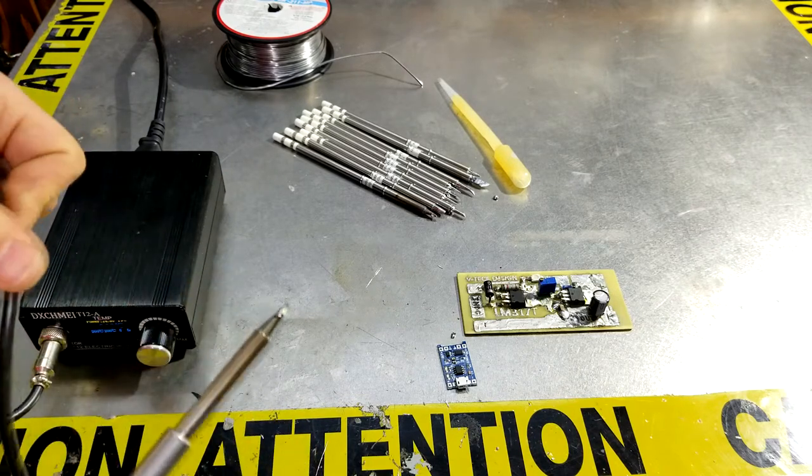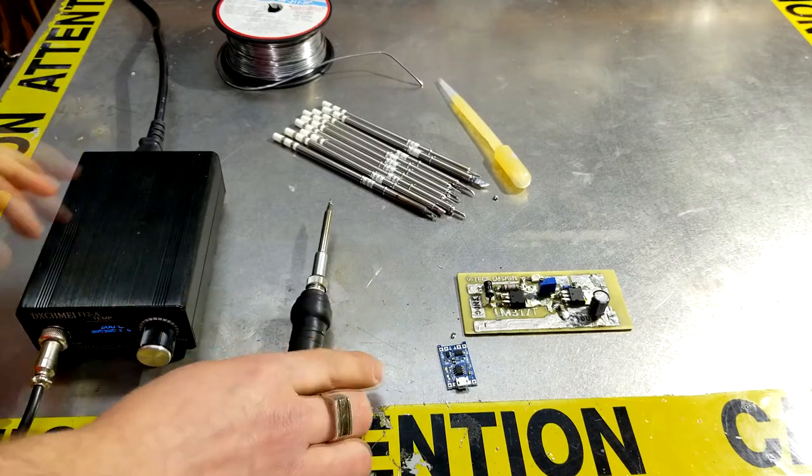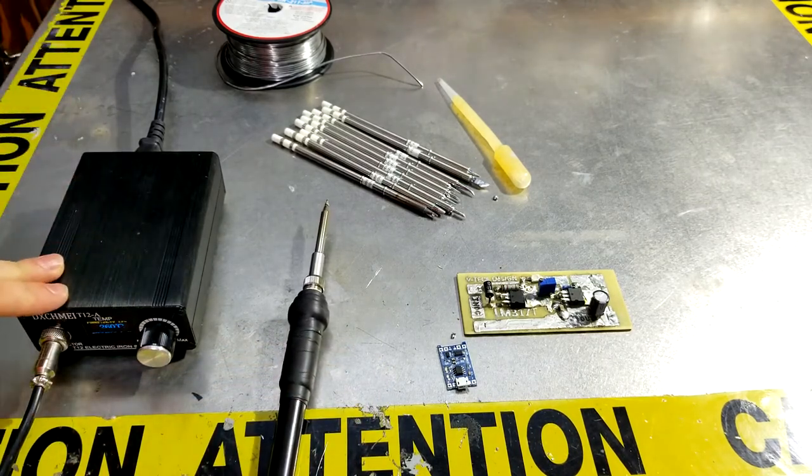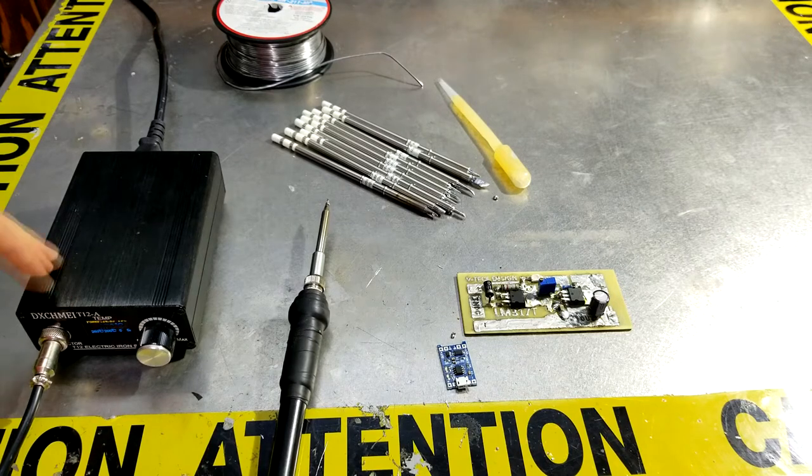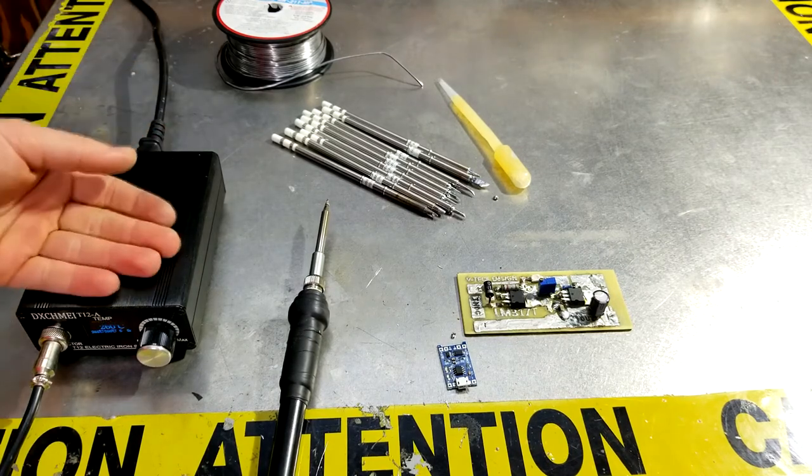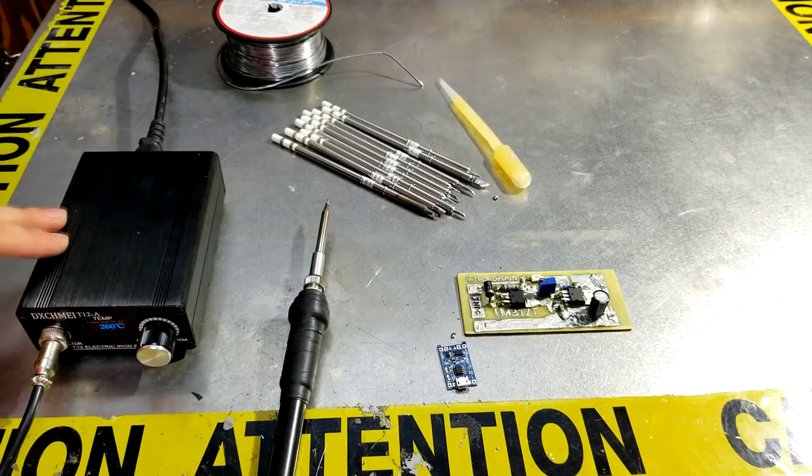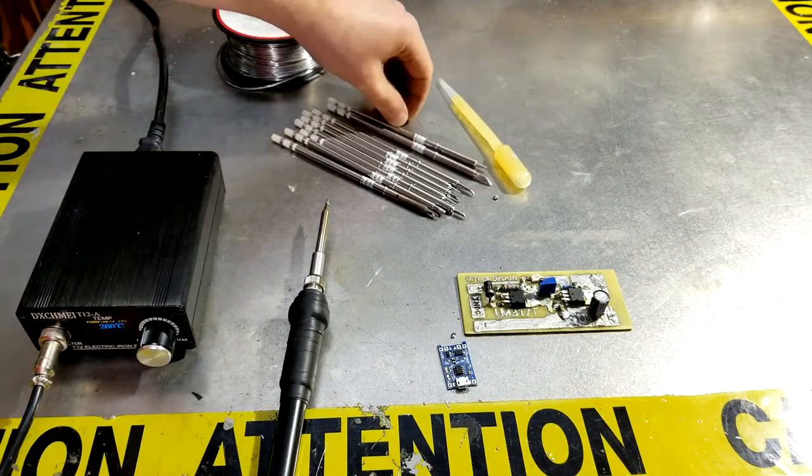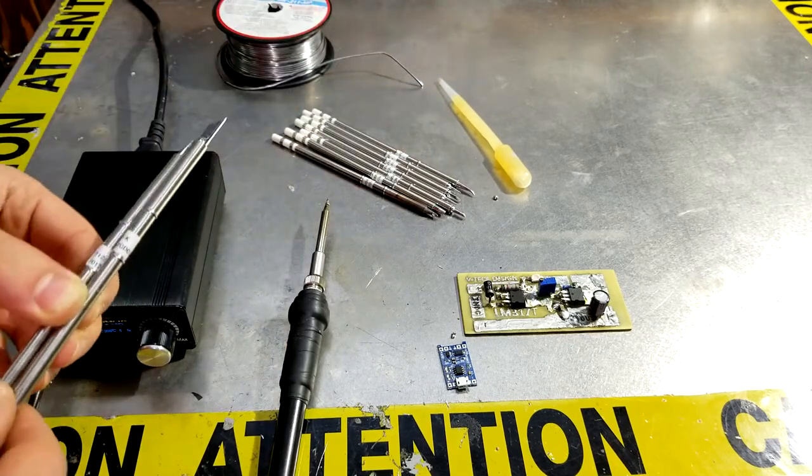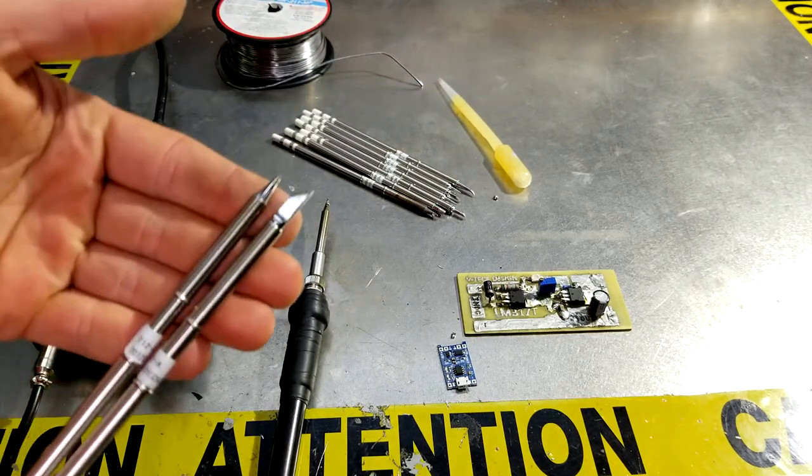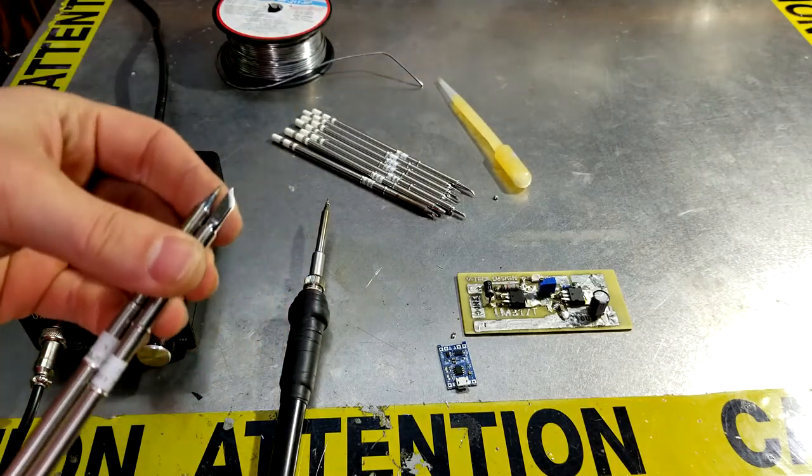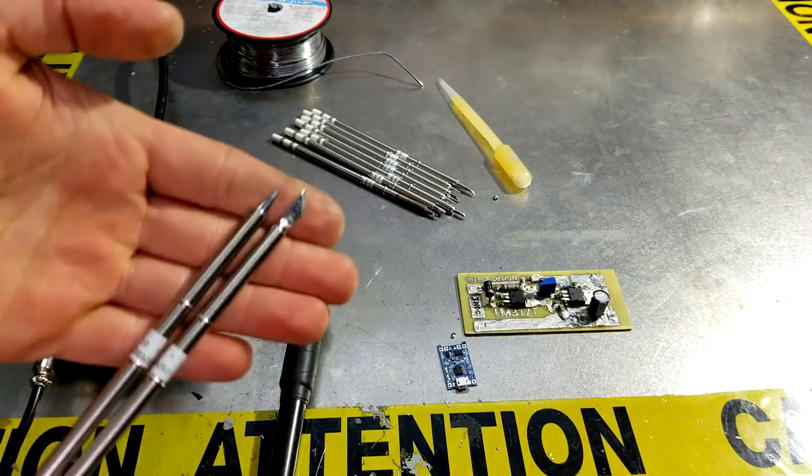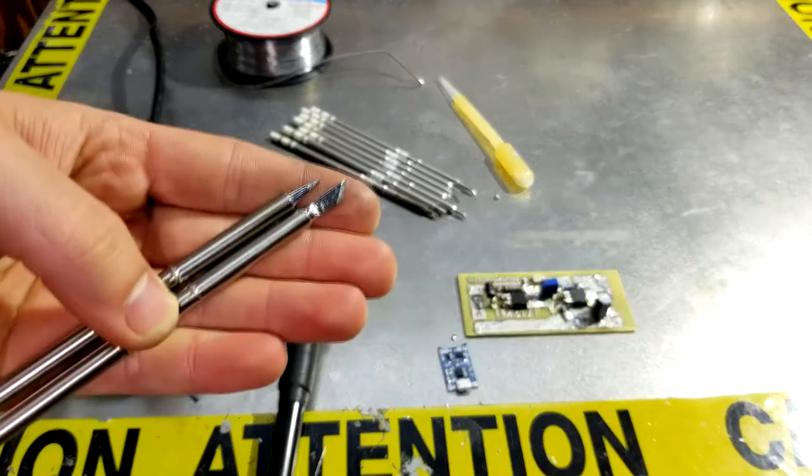The Hakko retails for $200 and something dollars Canadian, and that thing has better functionality than this. Obviously it's better quality, but as far as we are concerned, the quality comes from the tip here. So you might just end up buying genuine Hakko tips.